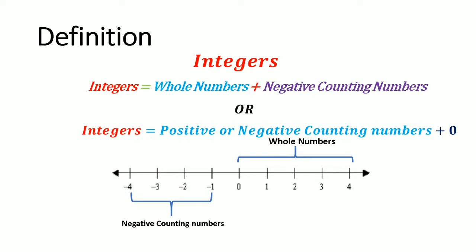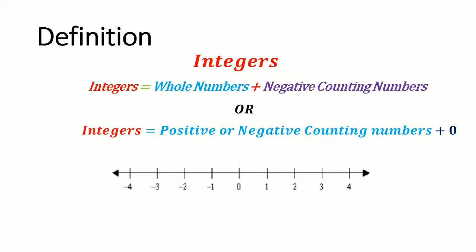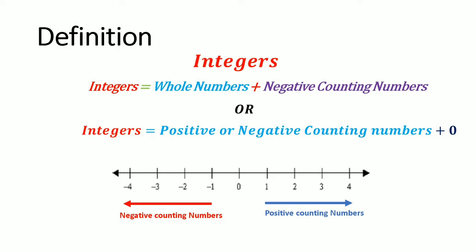Now let us look at the second definition. These are positive counting numbers and these are negative counting numbers. And here is zero. Zero is neither positive nor negative — this is what you may call a gray area. We can now see that integers are positive or negative counting numbers plus zero.